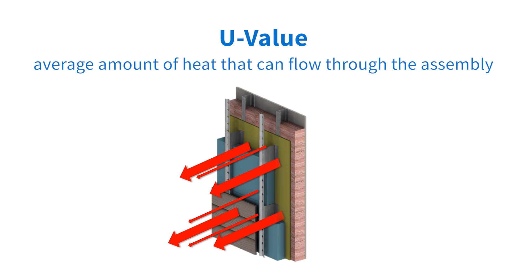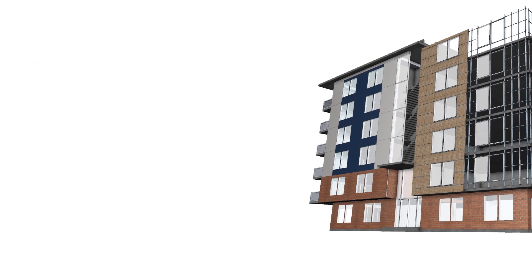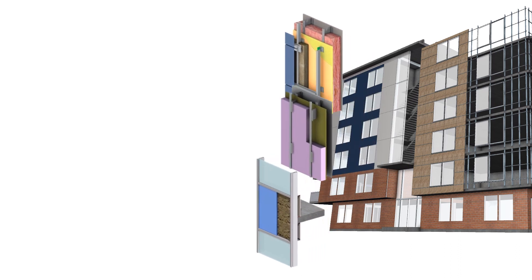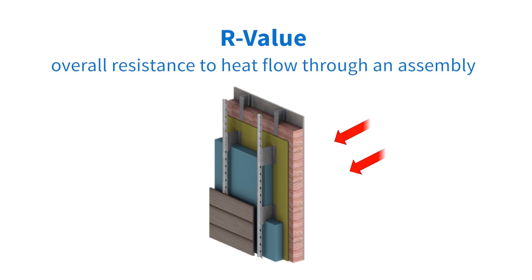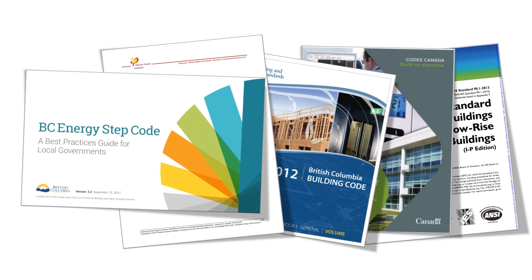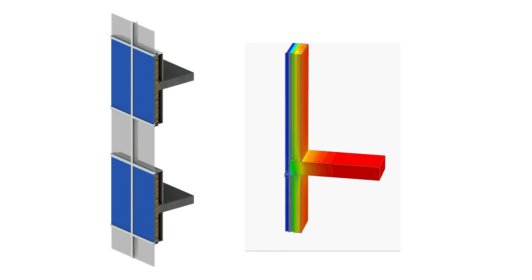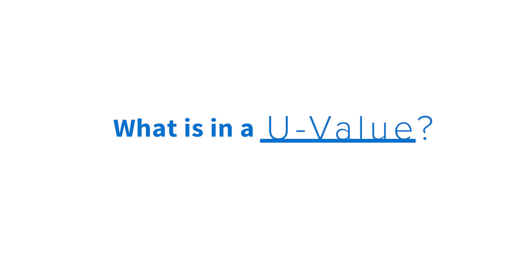A U value is the average amount of heat flow through the whole assembly, including both the insulating components and the thermal bridging components. This can be used to assess the thermal performance of the entire envelope or individual assemblies, wherein lower U values are representative of better thermal performance. Effective R values, which are the inverse of U values, represent the overall resistance to heat flow an assembly has. While R and U values are often used interchangeably, almost all energy codes determine compliance using envelope assembly U values. In order to make those comparisons and get better predictions of envelope performance, we have to know what is in an overall U value.